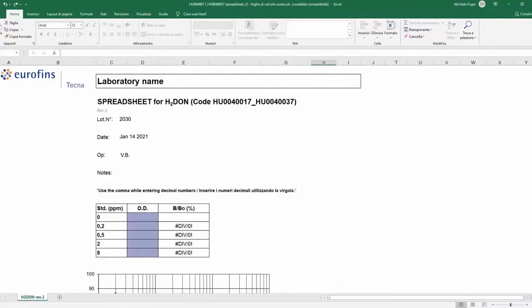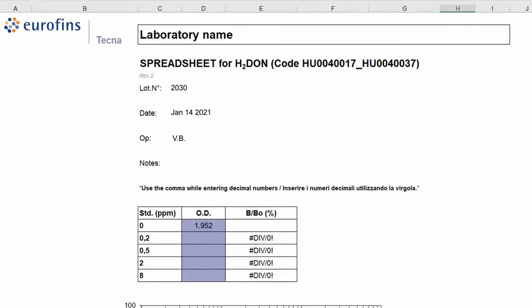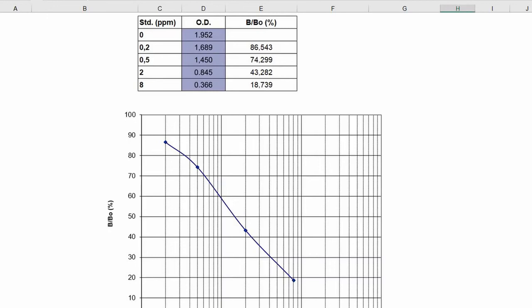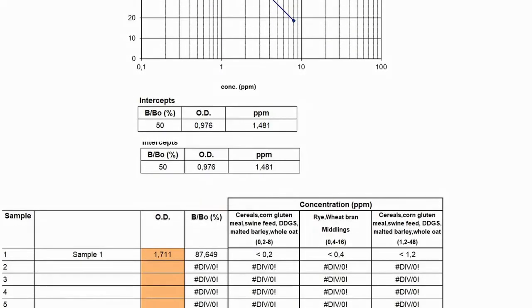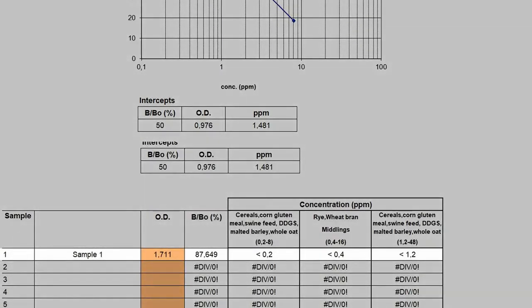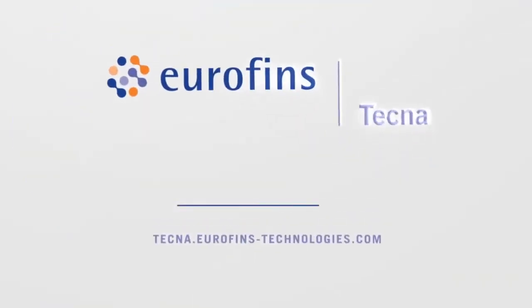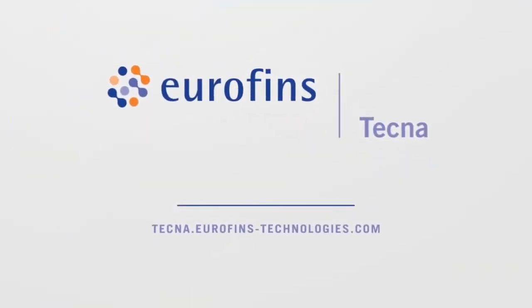Download from our website the dedicated spreadsheet. Copy the absorbances measured for each standard in the upper part of the Excel and those of the samples in the dedicated table. Concentrations are automatically calculated taking into account the sample dilution factor.